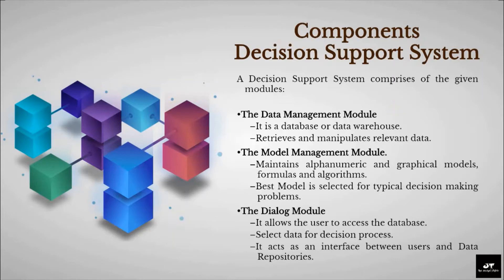A Decision Support System comprises three modules. First, the Data Management module — a database or data warehouse that retrieves and manipulates relevant data. Second, the Model Management module, which maintains alphanumeric and graphical models, formulas, and algorithms; the best model is selected for typical decision-making problems. And third, the Dialog module, which allows the user to access the database, helps the user to select data for the decision process, and acts as an interface between the user and data repositories.